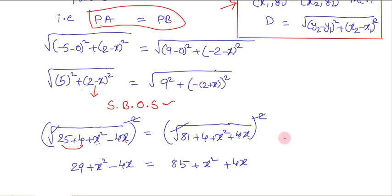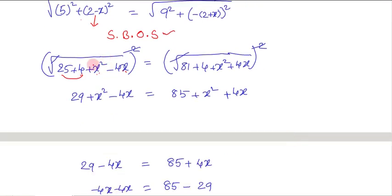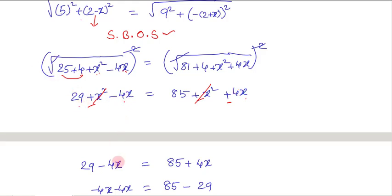Both sides have x squared terms with the same sign, so we can cancel them. Both sides also have 4x, but on the LHS it has a negative sign and on the RHS it has a positive sign, so they are different and cannot be canceled. This gives us: 29 minus 4x equals 85 plus 4x.